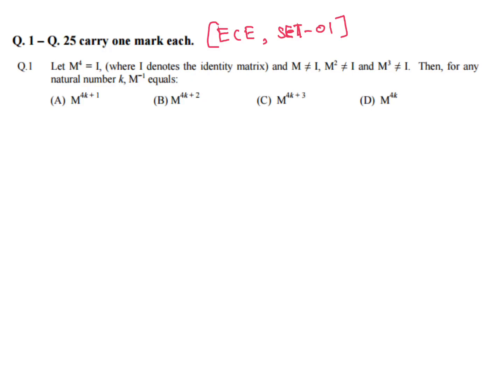Let M to the power 4 equal to I, where I denotes the identity matrix. M is not equal to I, M² is not equal to I, and M³ is not equal to I. Then for any natural number k, M inverse equals what? We will start from the options.